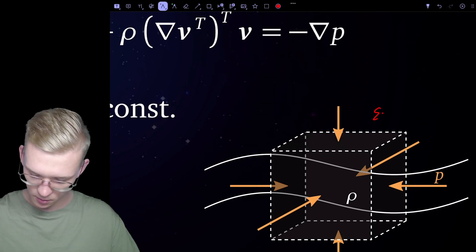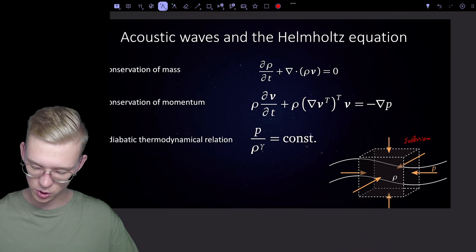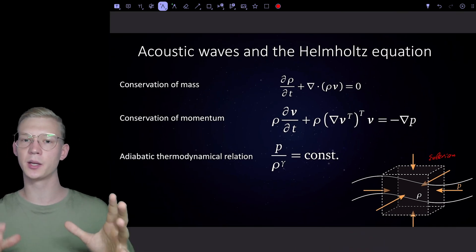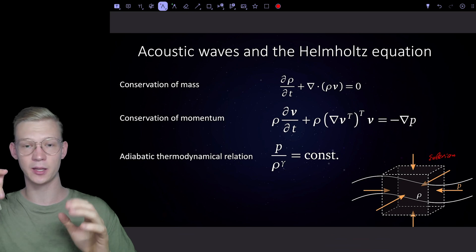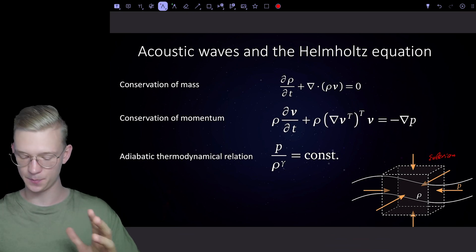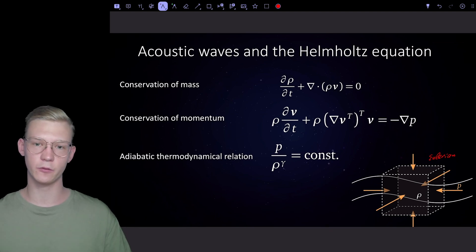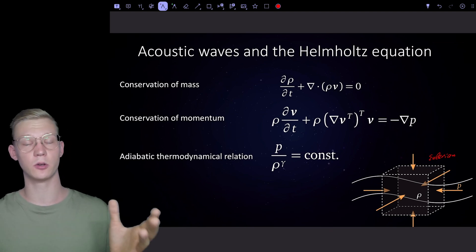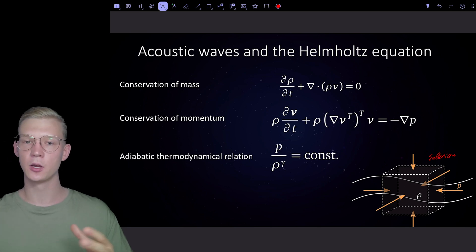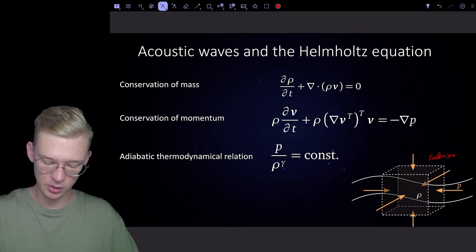In the Eulerian approach, we don't look at specific particles but at a packet of particles that are at a given place at a given time. And because we have conservation of momentum, conservation of mass, and conservation of energy for the Lagrangian approach, we also have them for the Eulerian approach. So let's look at those equations.